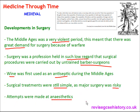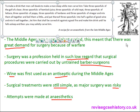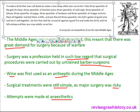This source talks about the use of an early anaesthetic in the Middle Ages. To make a drink that men call Dwail, to make him sleep while men carve him — meaning operating on him or carrying out surgery — take three spoonfuls of the gall of a boar, three spoonfuls of hemlock juice, three spoonfuls of wild nept, three spoonfuls of lettuce, three spoonfuls of poppy, three spoonfuls of henbane, and three spoonfuls of vinegar. Mix them all together and boil them a little, put three spoonfuls into half a gallon of good wine, mix it well, let the man sit against a good fire and make him drink until he falls asleep, and then you may safely carve him. That's a recipe for an anaesthetic from the late Middle Ages.